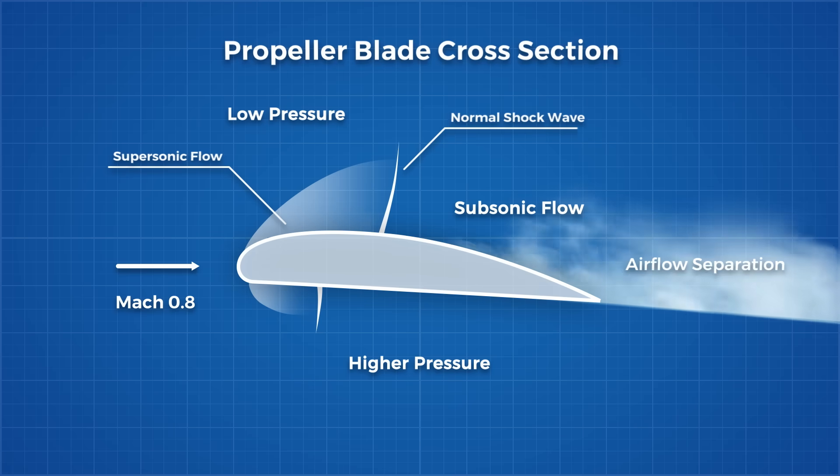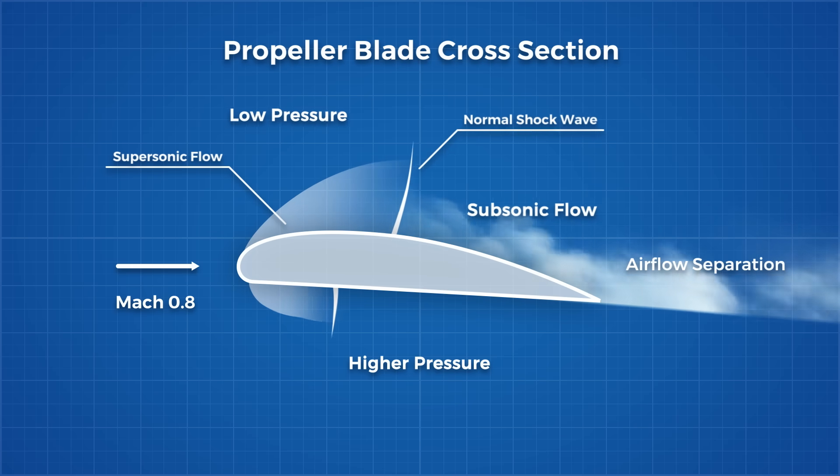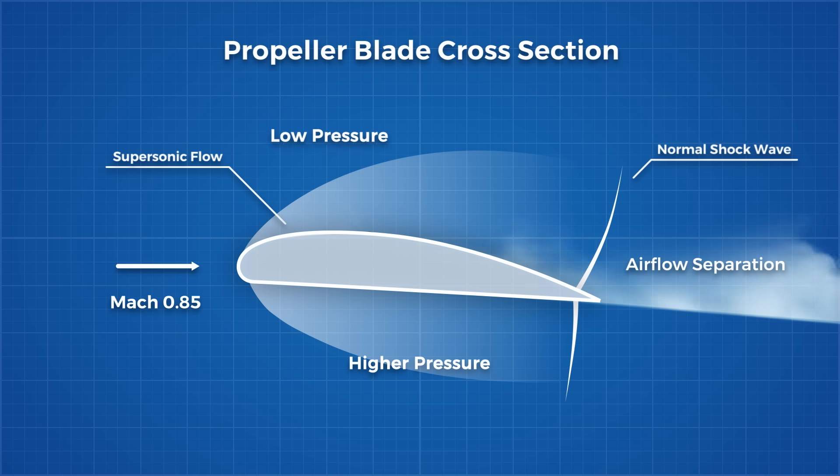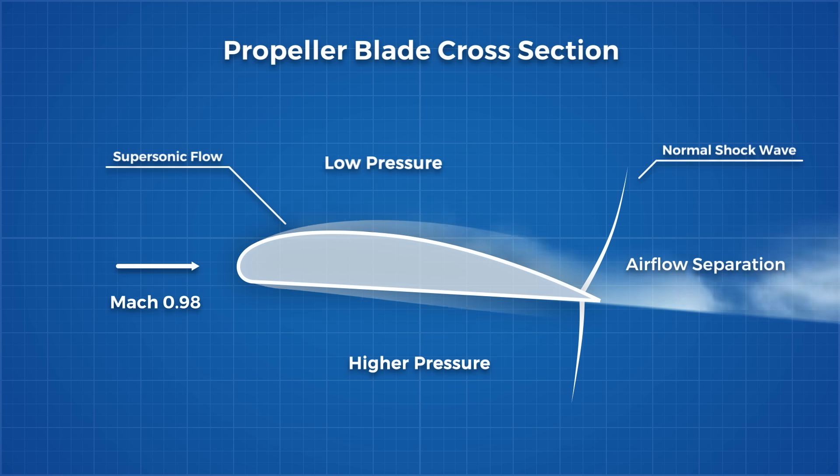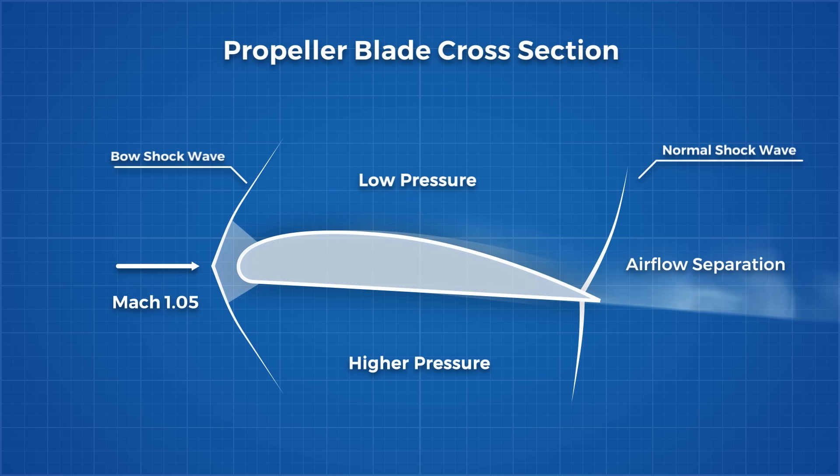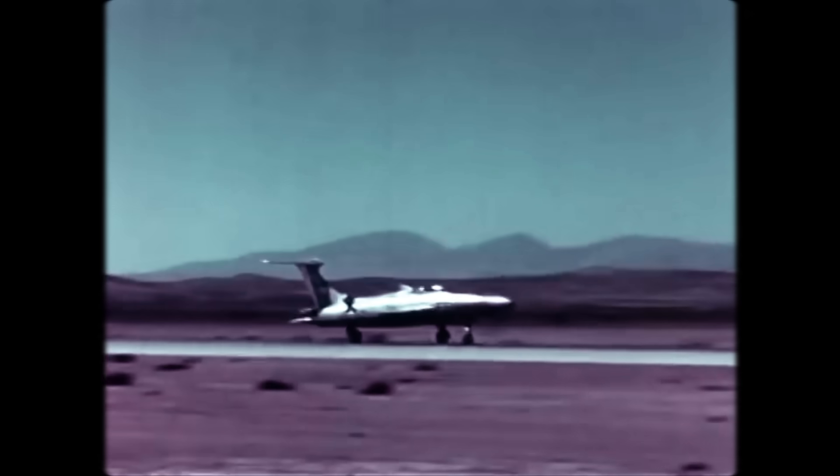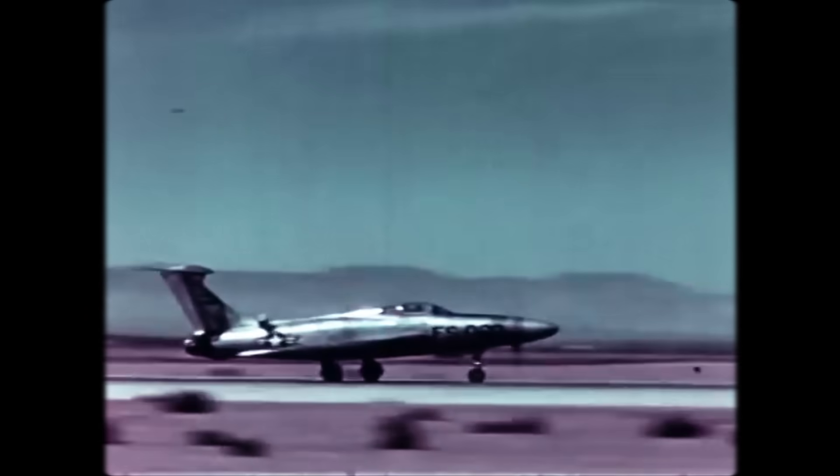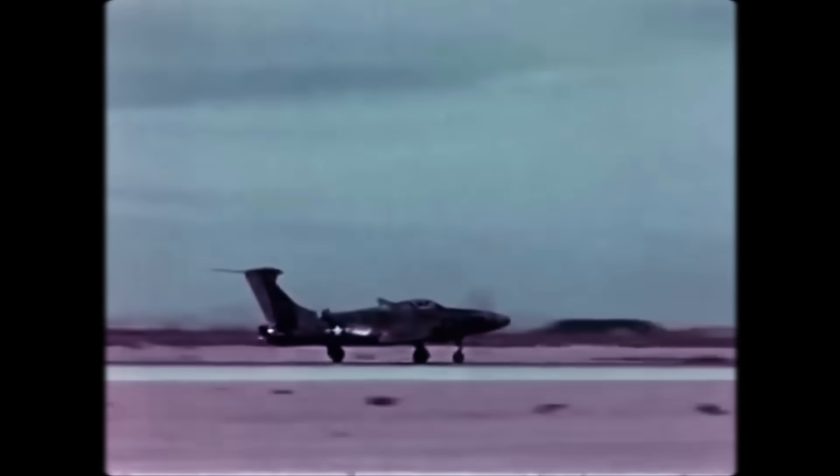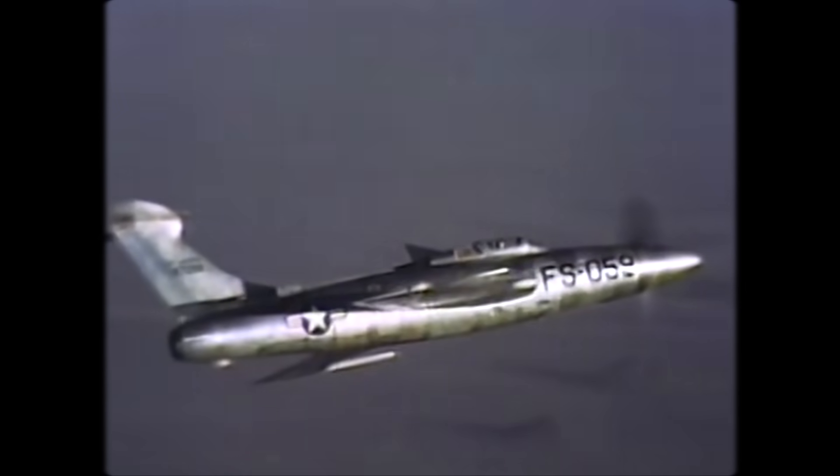As the propeller tips approach the speed of sound, air becomes highly compressible, and large pressure differences result in bubbles of unstable air and shock waves around the propeller tips. The disturbed air results in an increase in drag and a reduction in propeller efficiency, and could lead to other complications like propeller stall. Keeping the propeller efficiency as high as possible at the expected operating speeds is thus an important criterion in propeller design.